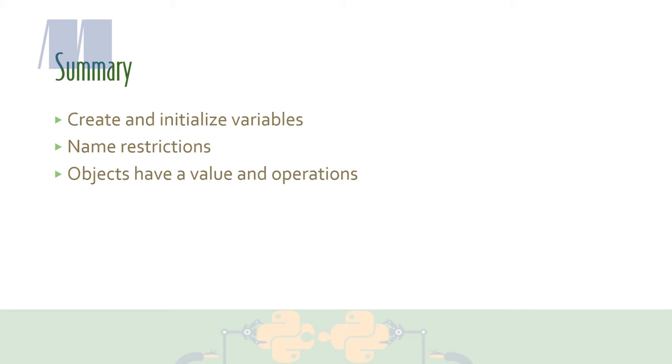In this video, you saw how to create and initialize variables. You saw that there are some restrictions for what you can name your variables. You saw that every object has a value, and an object has operations that you can do on it. A variable is a name that is bound to an object so that you can refer to it later on. In the next video, we'll group objects into different types.